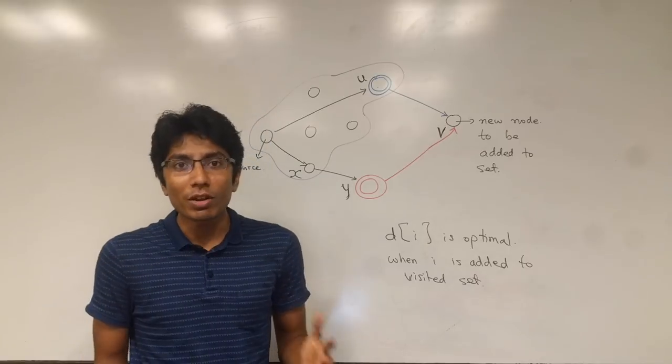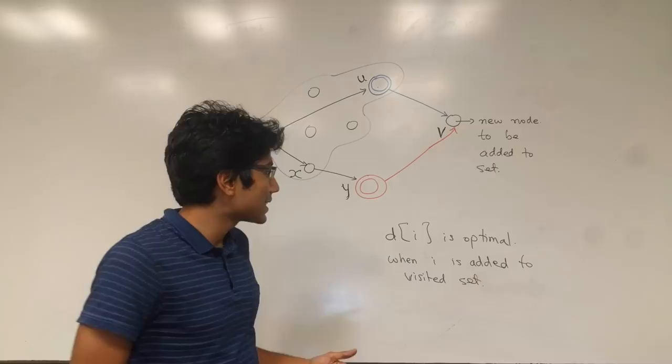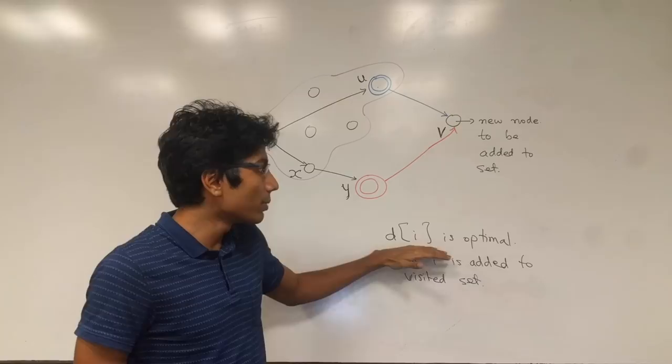We'll be solving the proof of Dijkstra's algorithm using induction. What we are claiming is that whenever you are adding a city i to the set of visited cities, you are going to have optimal distance from the source to that particular city i.